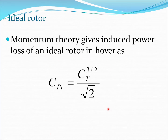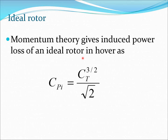We derived the equation for induced power loss in the previous lectures, and that was CPI = CT^(3/2) / √2. This is sometimes also known as the ideal rotor. The power loss here is basically coming from momentum theory itself and nothing more. In reality there are more sources of power loss which we have to add to this particular power predicted by momentum theory.